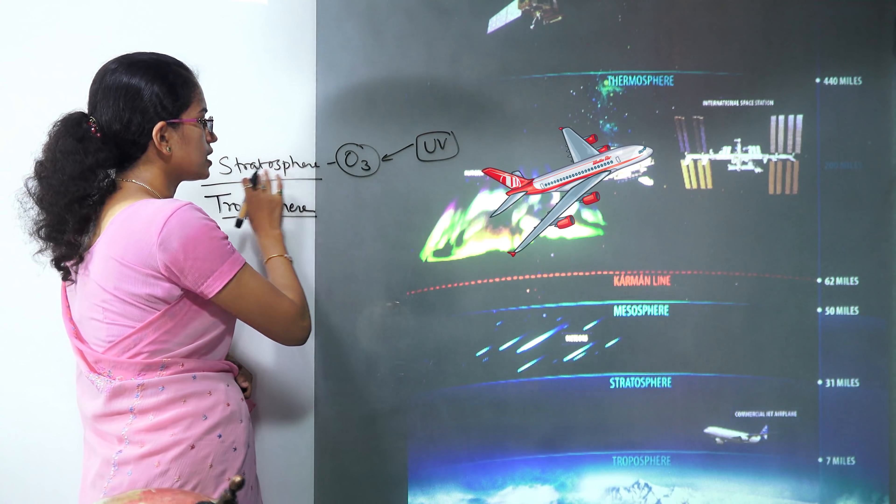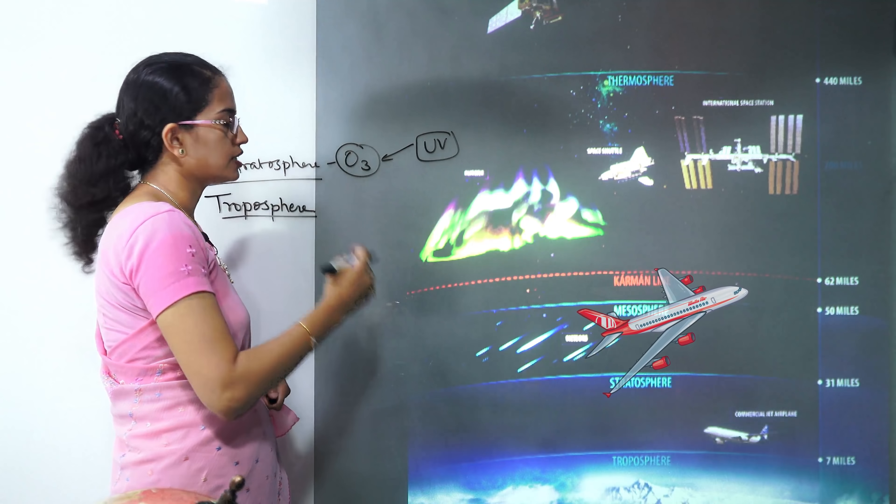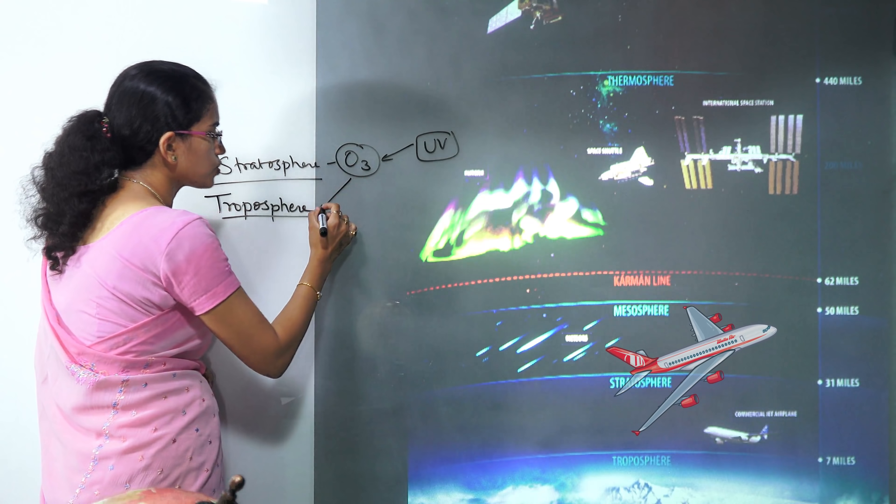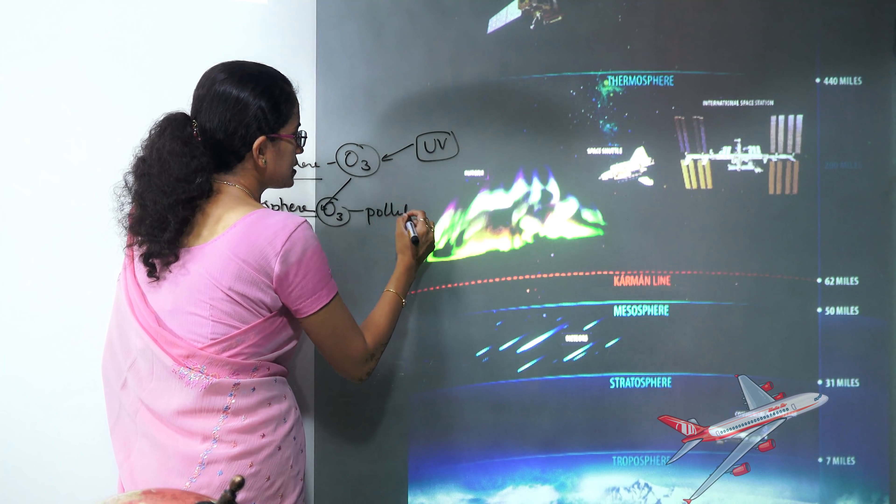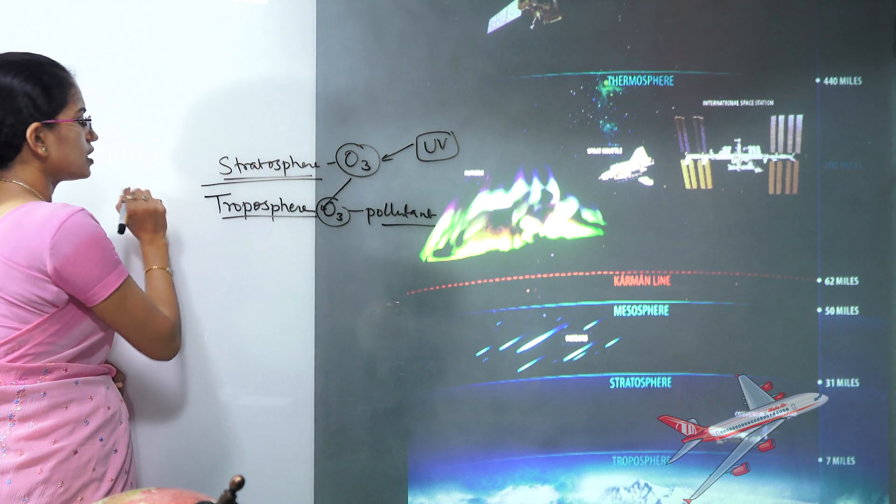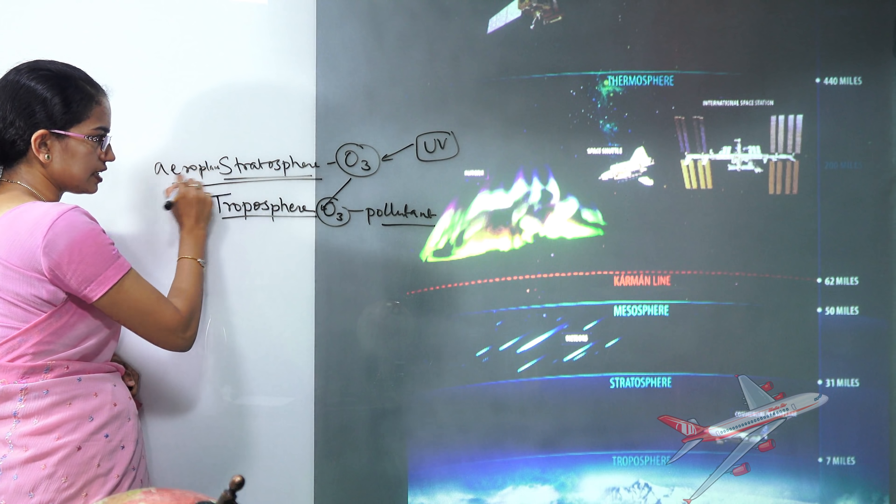Ozone when present in the stratosphere acts to prevent the harmful ultraviolet rays. But this ozone if present in the lower atmosphere acts as pollutant. So that's again important thing to remember. In the stratosphere the lower areas you would have aeroplanes and aircraft that could be seen.